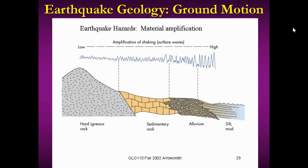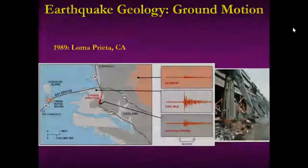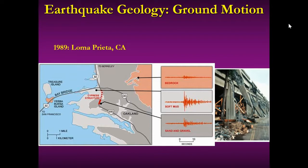There are numerous examples of areas spared versus destroyed because of local geology. In the Loma Prieta earthquake, shaking in bedrock areas was minimal. Looking at the Cypress freeway structure — a triple-decker bridge — the shaking in sand and gravel areas was much less than in the mud areas. The mud area is actually the one that collapsed, showing that local geology definitely matters.